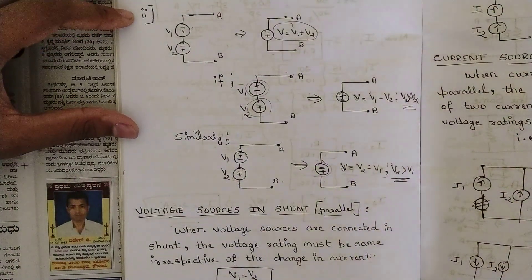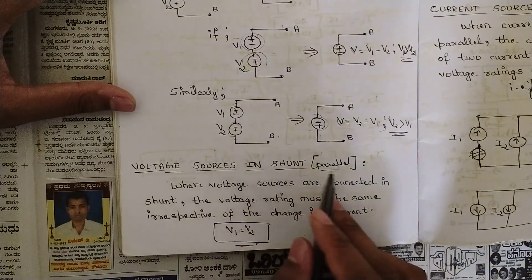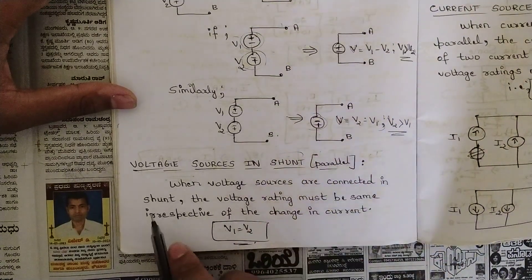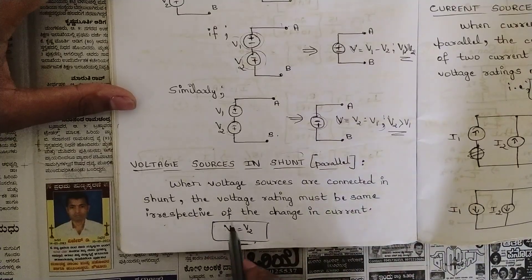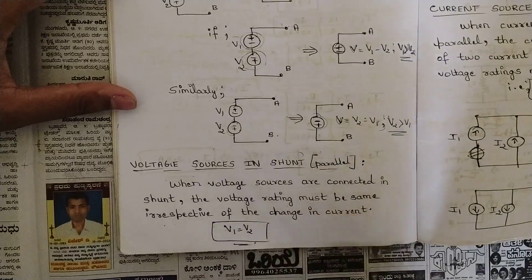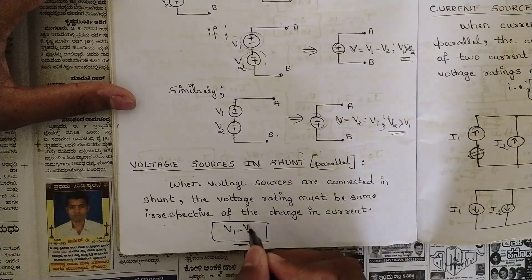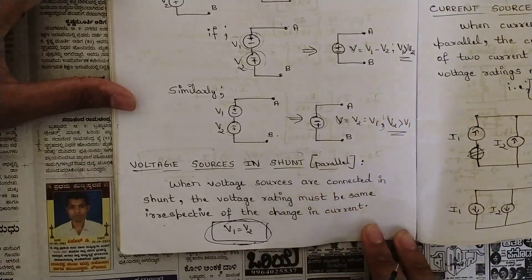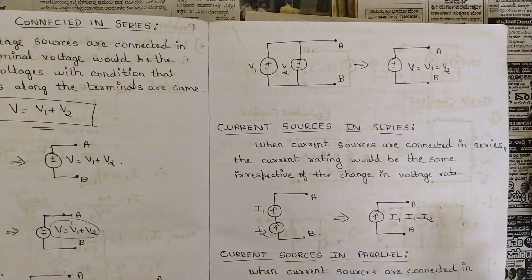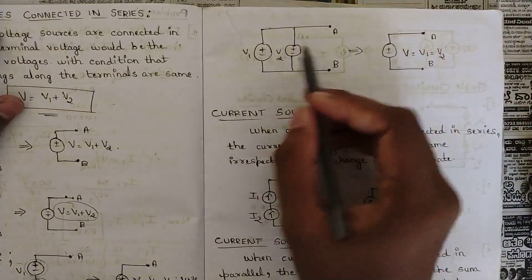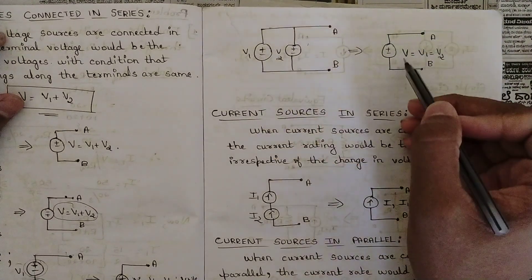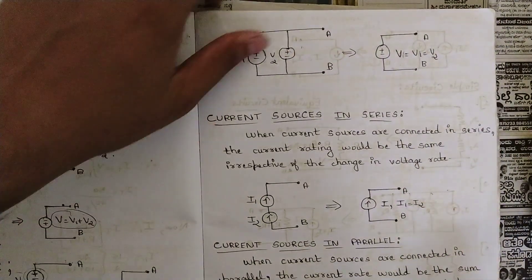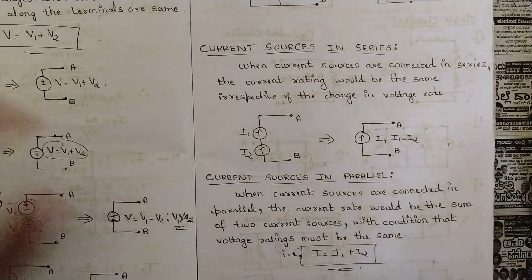One more condition: whenever voltage sources are in shunt or parallel — shunt and parallel mean the same thing — the voltage rating must be the same irrespective of the change in current. When two voltage sources are connected in parallel, they can be combined into a single voltage source only if V1 equals V2. Also note that current sources in series and voltage sources in shunt won't come into practical picture.